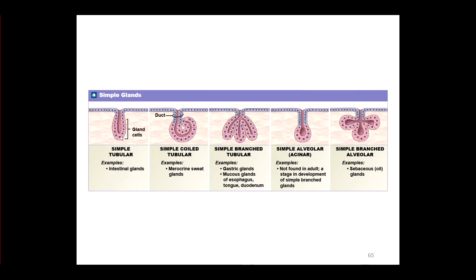Here's the glandular portion represented by the red cells. Notice on this gland the glandular portion is long and slender — that would be tubular. Here's another tubular, long and slender but with a little coil — a simple coiled tubular. Here's one where the tube itself is branched with three tubes, called a simple branched tubular. Compared to tubular, here's a round glandular portion — that's alveolar or acinar, a simple alveolar. And then a branched alveolar: one duct but three rounded glandular portions.